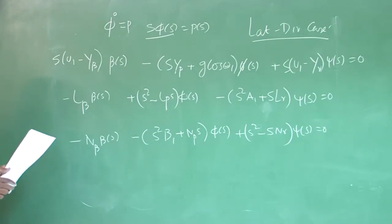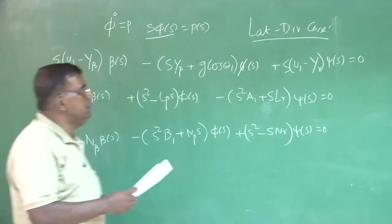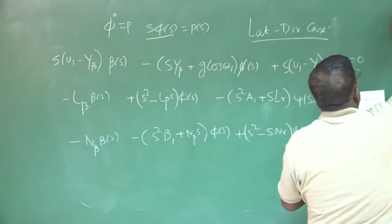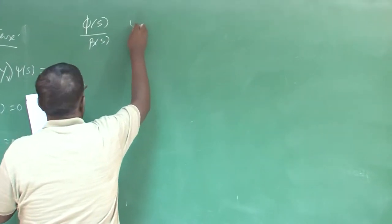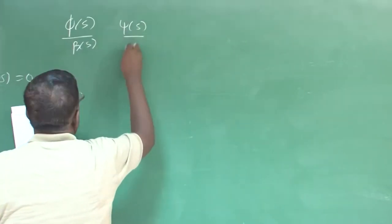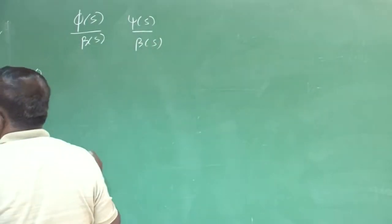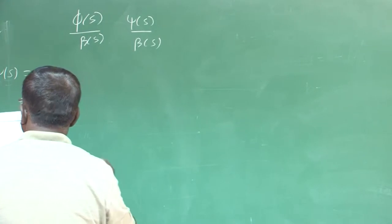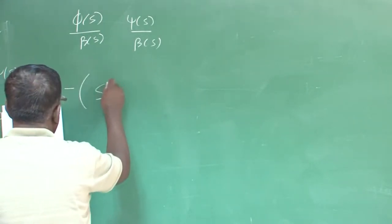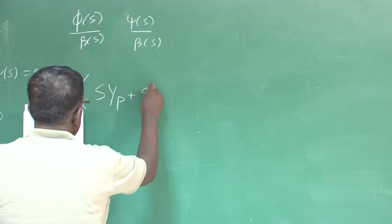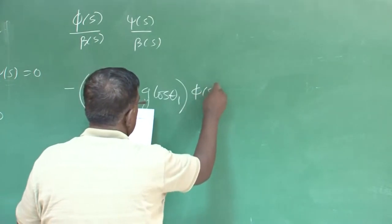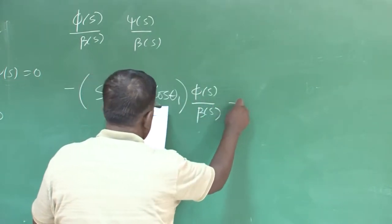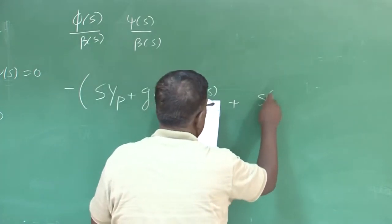Now, once I do this for a free response, I can write again — since I am looking for phi(s)/beta(s) and psi(s)/beta(s) — you have to divide by beta(s) and then I get an equation of the form: minus s·y_p plus g·cos(theta_1) into phi(s)/beta(s). It must be very boring — it is indeed boring because it is too simple.